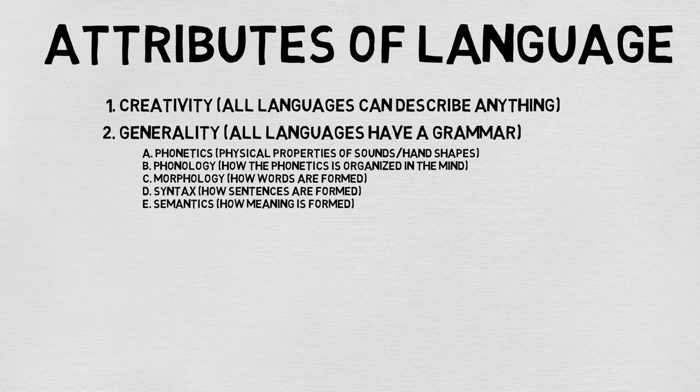First we have phonetics, which are the rules of the actual sounds or handshapes produced and processed in language. Then we have phonology, which is the rules of how these sounds or handshapes are actually organized and processed in our mind, rather than from physical components. After that we have morphology, which is how words are formed from sounds or shapes. Followed by syntax, which are the rules of how sentences are formed from words. And then finally, and most abstractly, we have semantics — the rules of how meaning is formed at all of these levels.